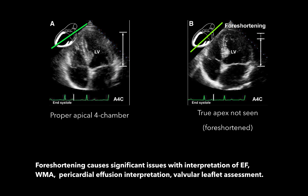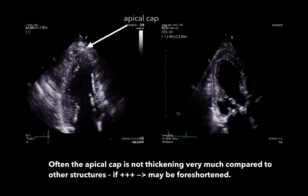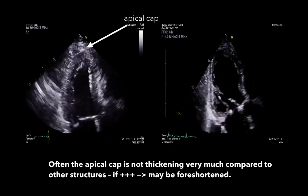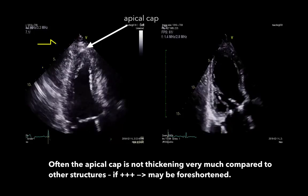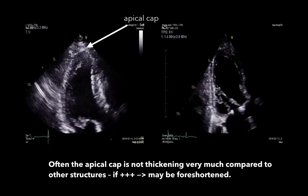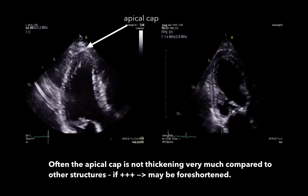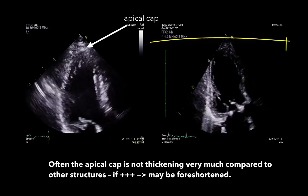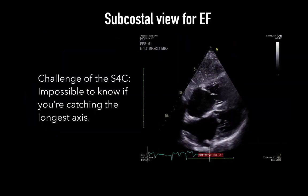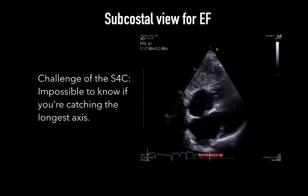Usually, a foreshortened LV appears to have a better EF than it actually has. To avoid foreshortening, one should always attempt to obtain the longest view of the ventricle and ensure the apical cap or apex is not moving, as seen on the left clip. The apex should be the anchor of the heart during echo assessment — it should only thicken, not move in space. Its contraction is usually the smallest of all LV segments. The right clip, in comparison, shows a moving and thickening apex that changes during every contraction — this is not the true apex. Foreshortening is why the subcostal four-chamber view can be challenging for LV assessment.